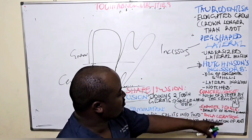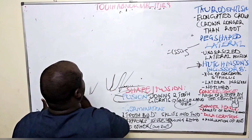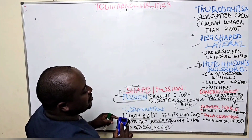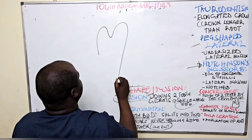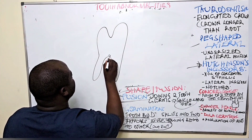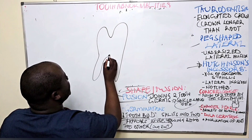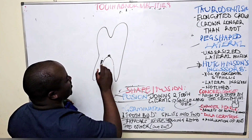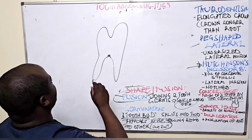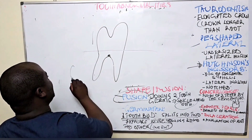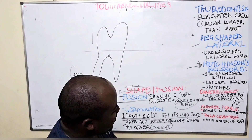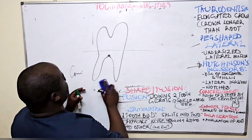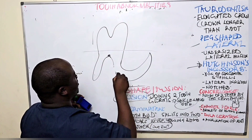An enamel pearl is a droplet of enamel found not within the enamel itself but around the root area — something you find around the cementoenamel junction or below, where normally only cementum is present. Finally, dilaceration is the angulation or bending of the root of a tooth.